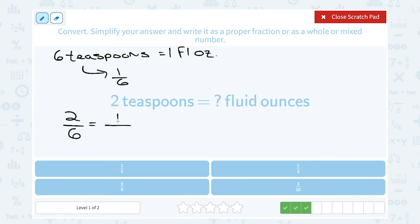2 goes into 2 one time, and 2 goes into 6 three times. So that means that 2 teaspoons is equal to 2 sixths, or one-third of a fluid ounce.